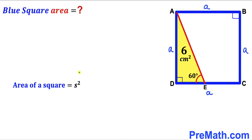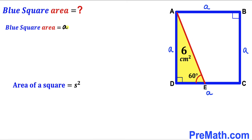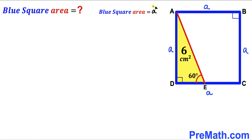Let's recall the area of a square formula: area is always equal to s², where s represents the side length of the square. In our case the side length is lowercase a, so the blue square area is going to be a². Our task is to find the value of a².